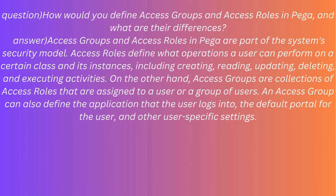Question: How would you define access groups and access roles in PEGA, and what are their differences? Answer: Access groups and access roles in PEGA are part of the system's security model. Access roles define what operations a user can perform on a certain class and its instances, including creating, reading, updating, deleting, and executing activities. Access groups, on the other hand, are collections of access roles assigned to a user or group of users. An access group can also define the application that the user logs into, the default portal for the user, and other user-specific settings.